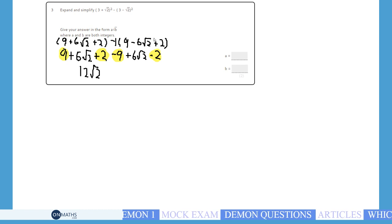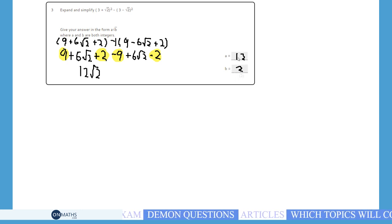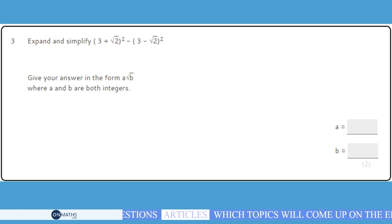And therefore, it says it wants it in this form. So, it's going to be twelve root two. So, my answer is a is twelve and b is two. And that's the answer. And that's the end of the questions. Hurray!